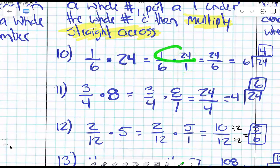So if I multiply straight across, what is 1 times 24? 24. What is 6 times 1? 6. Is this an acceptable final answer? No. Why? It's an improper fraction, right?